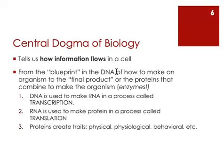The first statement of the dogma says DNA is used to make RNA in a process called transcription. RNA is then used to make protein in a process called translation. And proteins create traits — physical traits, physiological traits, anatomical traits, behavioral traits — everything that makes that organism unique.